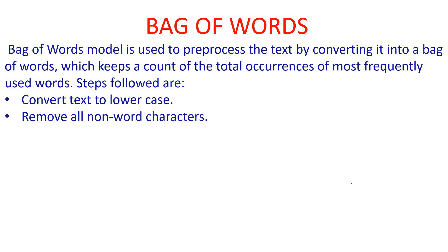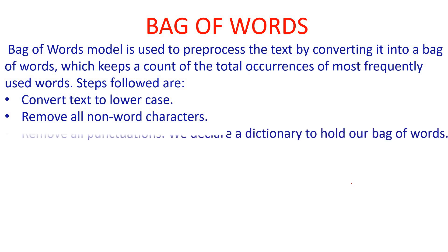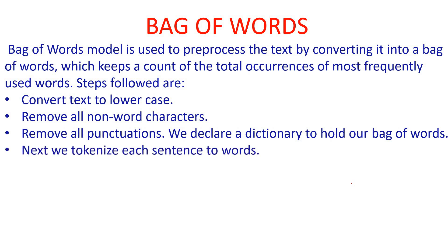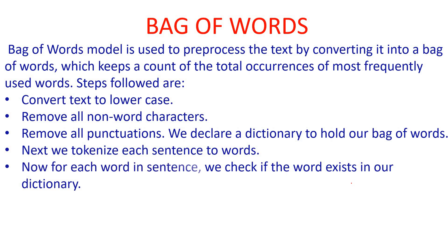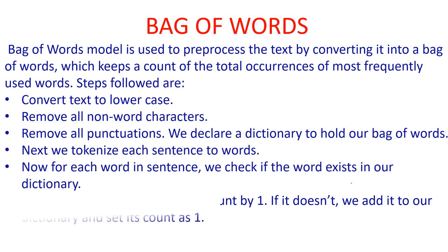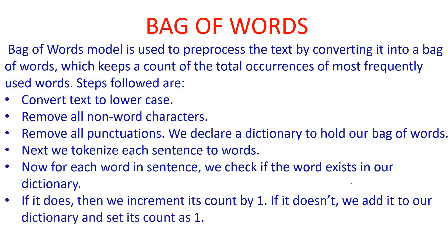The steps followed are: first, convert the text into lowercase. Next, remove all non-word characters that are not required, then remove all punctuation marks. Declare a dictionary to hold the bag of words. Then tokenize each sentence into words. After that, for each word, check if the word exists in the dictionary — each word should be kept in the bag of words only once with its count. If that word occurs again, the count is increased by one. This way we keep track of all words in the bag of words with their frequency count.